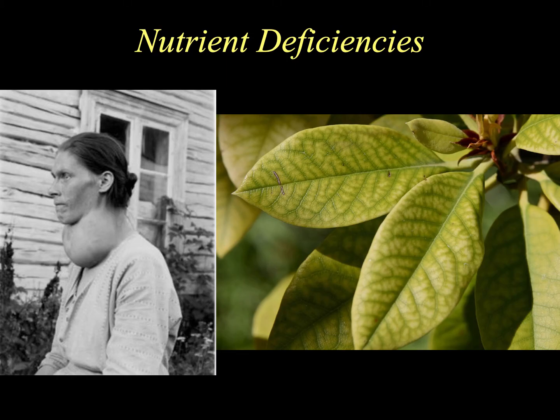Here we see a photograph on the left of someone with goiter, and that's because of iodine deficiency. On the other side, we see a rhododendron with some type of nutrient deficiency that is causing it to not be as photosynthetic as it should be — it's probably a manganese deficiency.